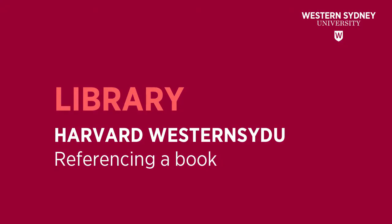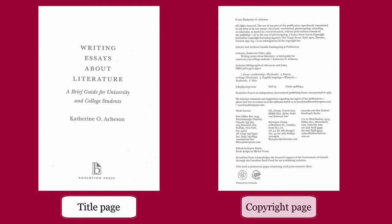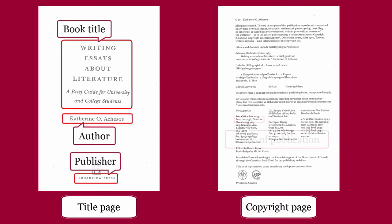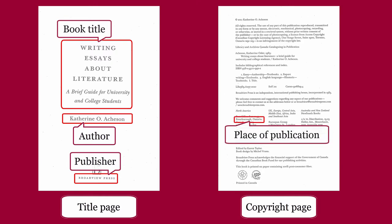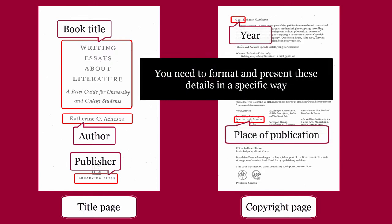This library video will show how to reference a book using the Harvard Western SIDU style. The details for citing a book are generally found on the title page and the copyright page. Important details include author, book title, publisher, place of publication, and year. You need to format and present these details in a specific way.